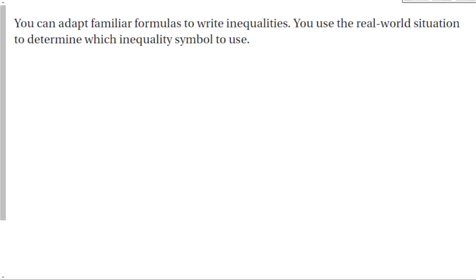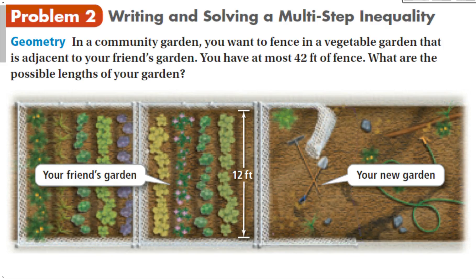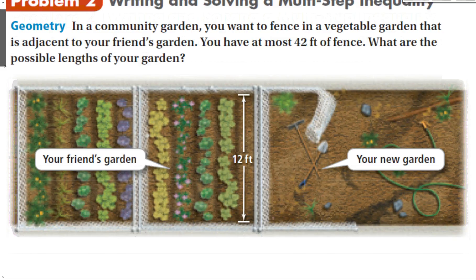You can adapt familiar formulas to write inequalities. We can use real-world situations to determine what inequality symbol to use. In this geometry problem with a community garden: you want to fence in a vegetable garden adjacent to your friend's garden. You have at most 42 feet of fence. What are the possible lengths? A complete fence has four sides, and the distance around a figure is the perimeter.